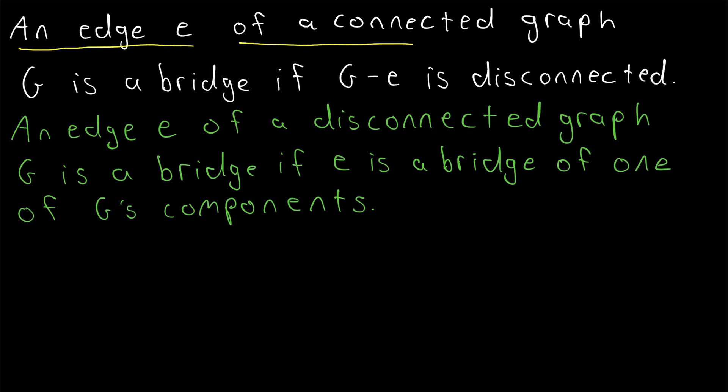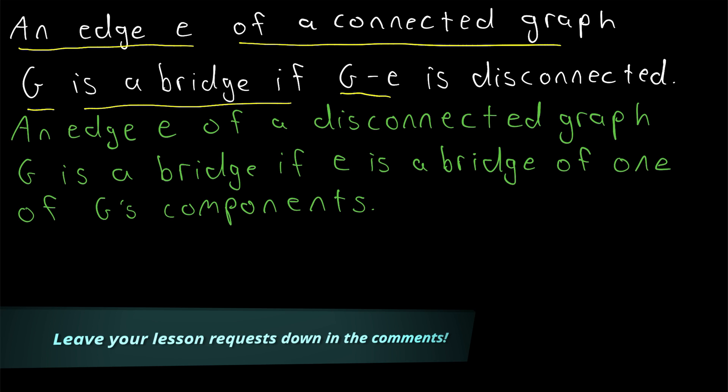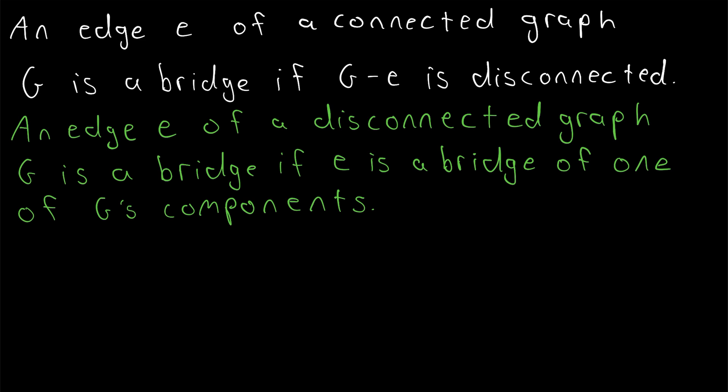An edge E of a connected graph G is a bridge if G minus E is disconnected. In today's Wrath of Math lesson, we'll be talking about bridges in graph theory.